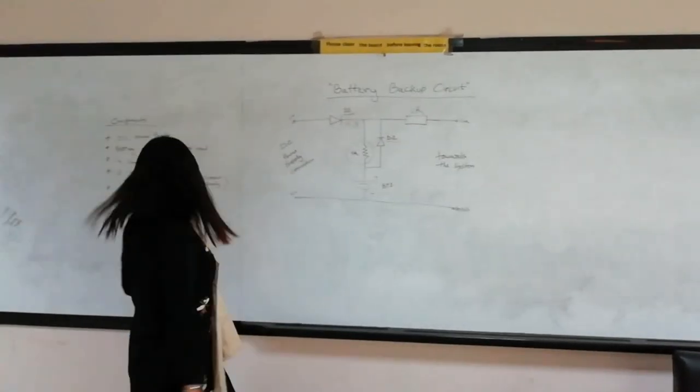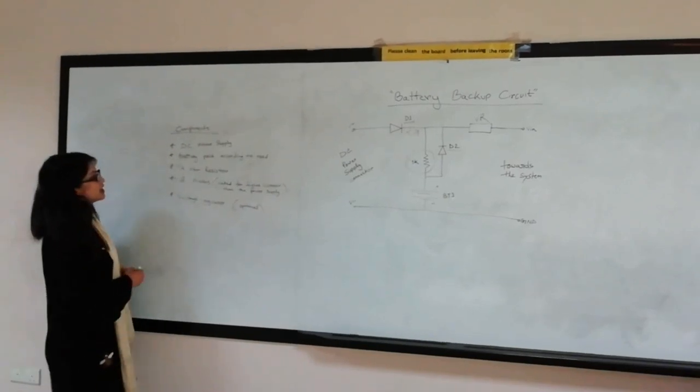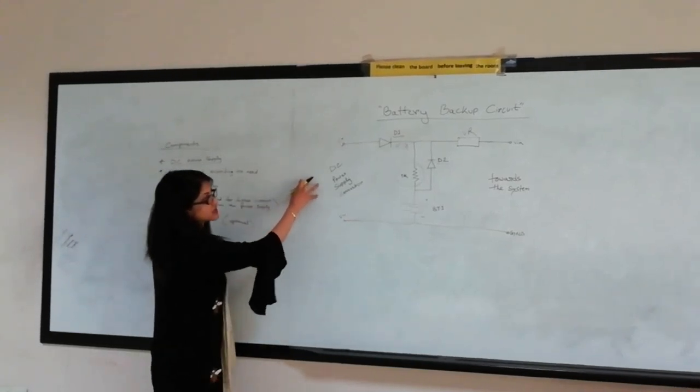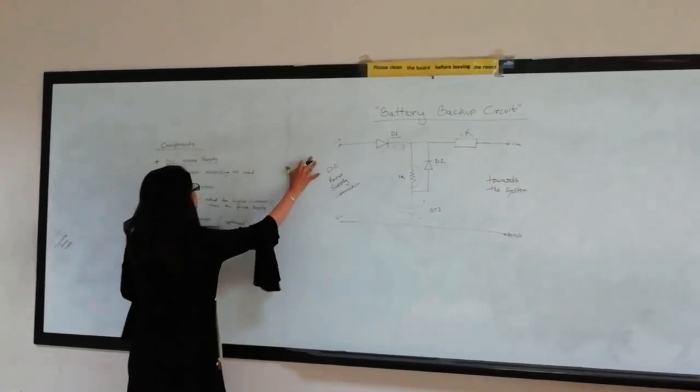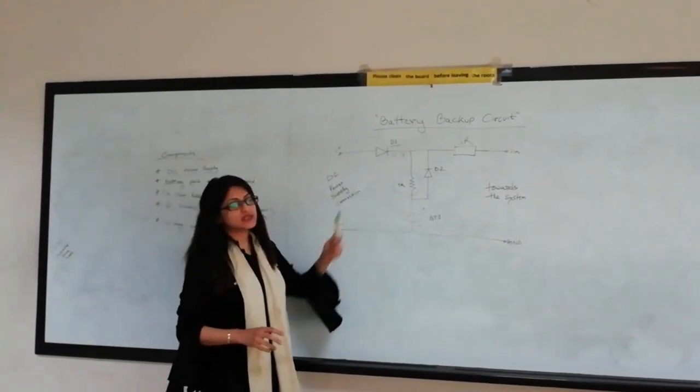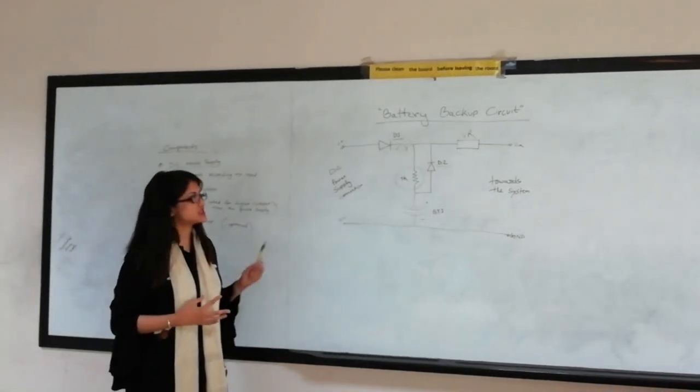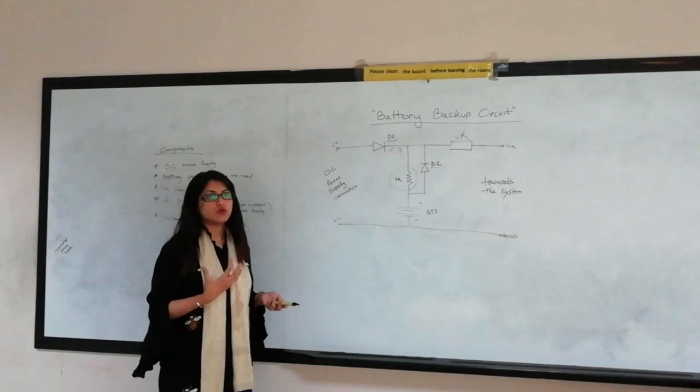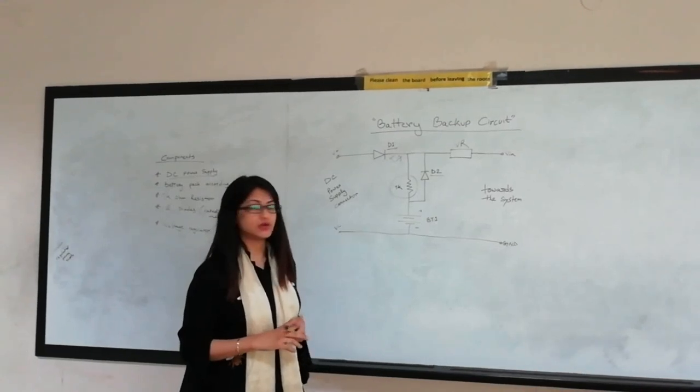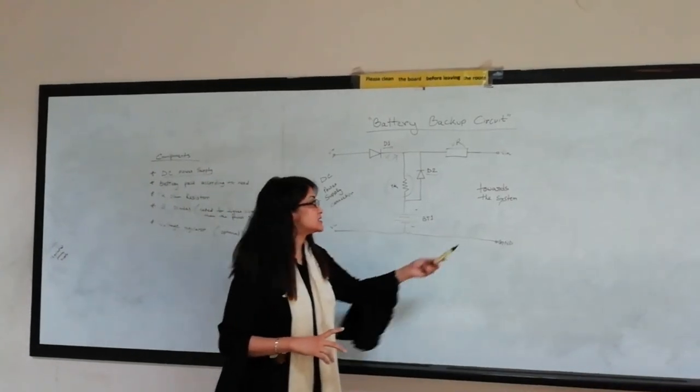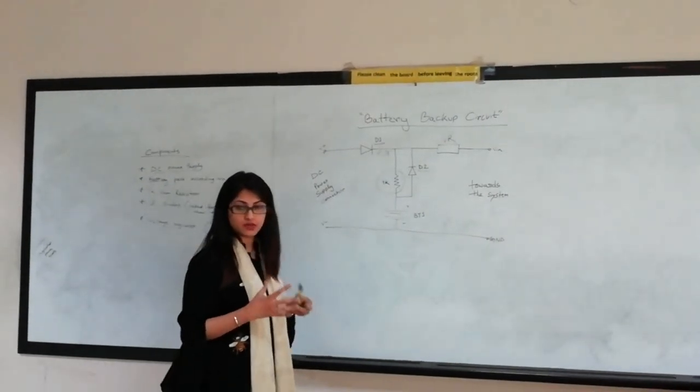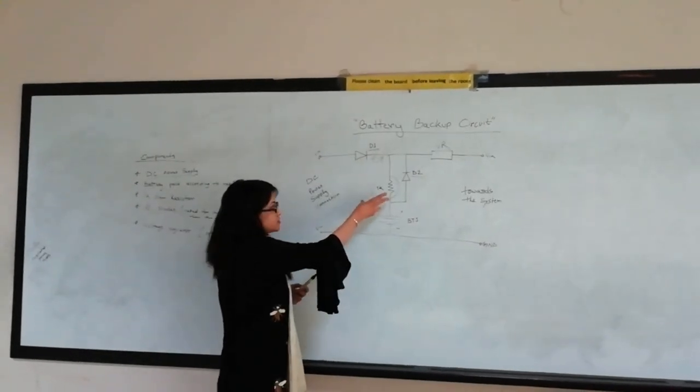Now let's move on to the components that we have used. So here we can see we need a DC power supply which is connected with a DC power supply connector on this side, and then a 1K ohm resistor which is this one. This totally depends on the system that you have to power. From that we have a calculation and then make the resistor value.